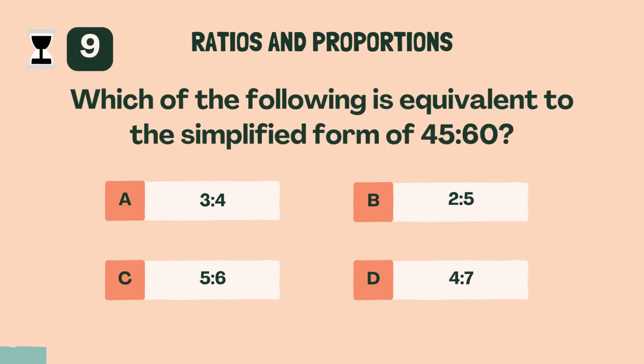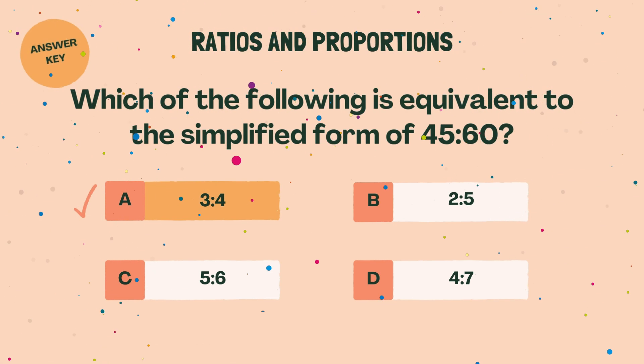Which of the following is equivalent to the simplified form of 45 to 60? A, 3 to 4.